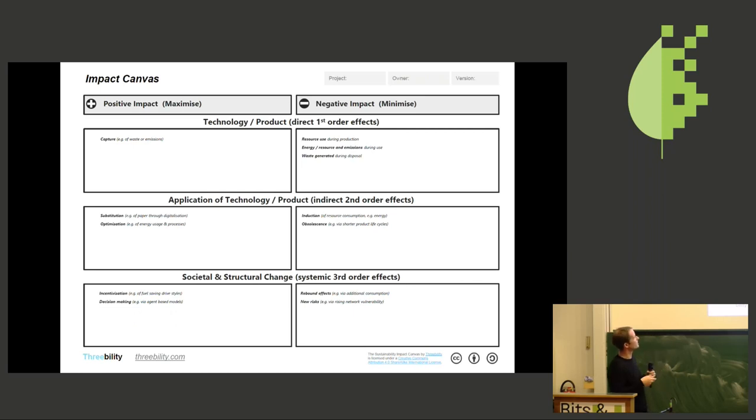And also you have a third level, the societal impact, where it comes about changing of behavior through, for example, nudging.